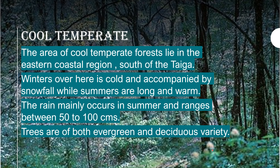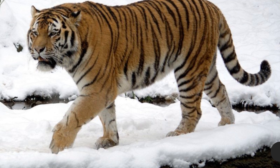This region has cool temperate forests. Here the forests are both evergreen and deciduous variety, which means there are trees which never shed their leaves while the deciduous trees shed their leaves at least once a year. Among the animals found here, bears, foxes and wolves are common, but the rare Siberian tiger is the most magnificent. It is also known as the Amur tiger and is the largest living cat.